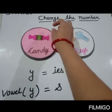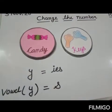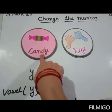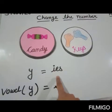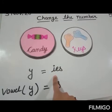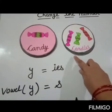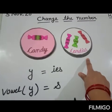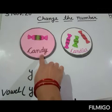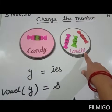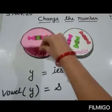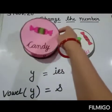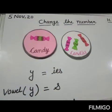Next is candy — C-A-N-D-Y. Now see, before Y there is no vowel sound — there is a consonant sound. So we remove Y and add I-E-S. What does it become? Candies — C-A-N-D-I-E-S. Since there was no vowel sound before Y, we removed Y and added I-E-S. In 'key', there was a vowel before Y, so we did not remove Y and simply added S.